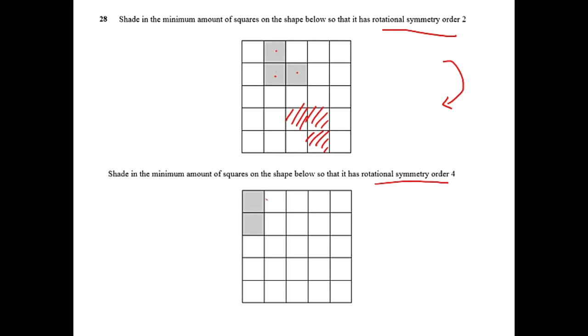For this next question, it's rotational symmetry order 4. So you do the same thing but you turn it round 90 degrees at a time.